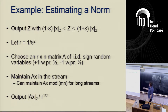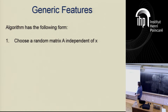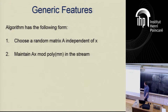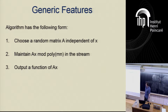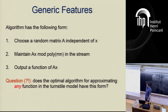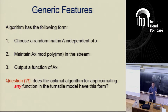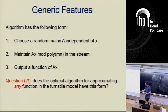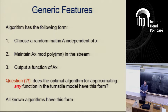Look at the structure of this algorithm. Before the stream begins, you choose a random matrix A independent of x. You maintain Ax mod poly(Mn) in the stream. At the end, you output a function of Ax. The question we ask is: does the optimal algorithm for approximating any function in the turnstile model have this form — where any arbitrary function of the underlying vector x is computed via a linear sketch? All known algorithms do have this form for any problem.